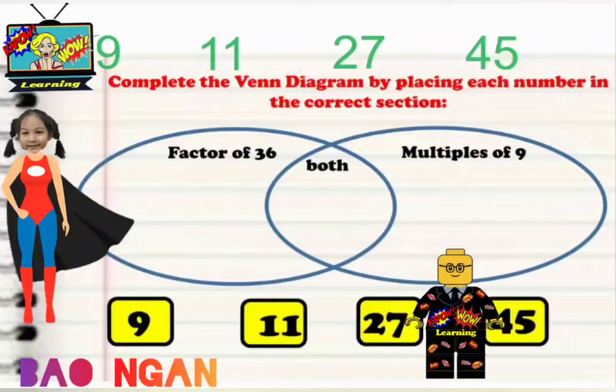It's a Venn diagram problem, but we've got some difficult numbers because they're higher today. It says complete the Venn diagram by placing each number in the correct section. So we need to know our factors of 36, we need to know our multiples of 9, and if it's both,